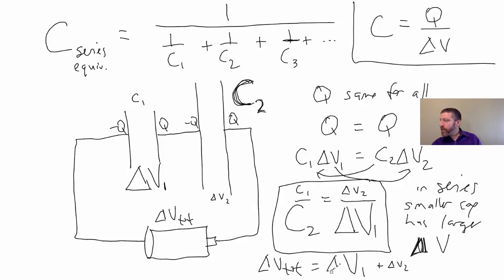So, a couple things to remember here. In series, bigger cap has a smaller delta V. You don't need to push as hard to get that same amount of charge on there.